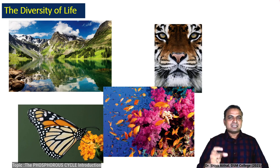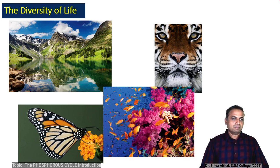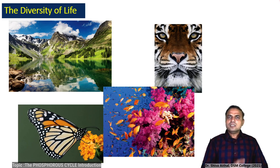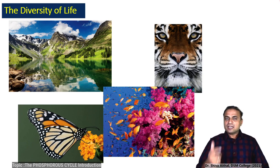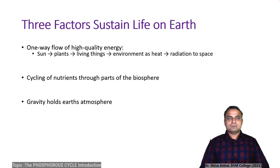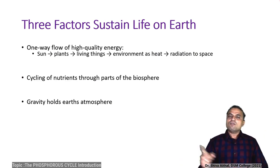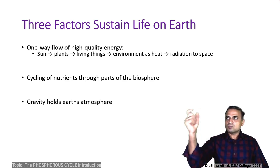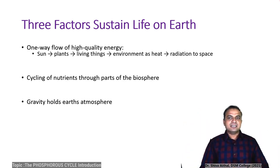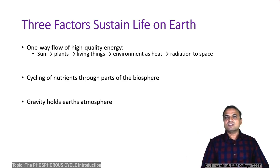You should now understand the importance of these elements — carbon, nitrogen, phosphorus, or sulfur — which are basically responsible for the biodiversity on this earth. However, all these elements are not freely available, nor can we directly utilize them in free form. There have to be some intermediate reactions. We saw that with carbon, with nitrogen, and now we will see that with phosphorus. Three factors sustain life on earth: a one-way flow of high-quality energy from sun to plants to living things then to the environment as heat; cycling of nutrients through the biosphere; and gravity which holds everything on the surface of the earth.